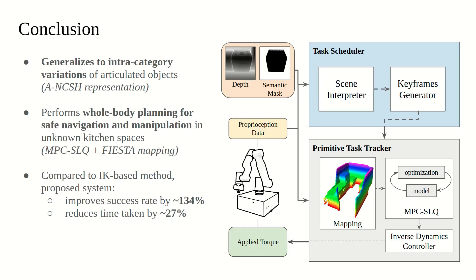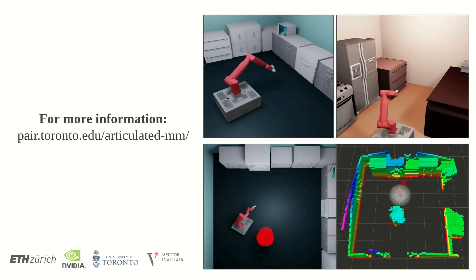In conclusion, we present a method that generalizes to inter-category variations of articulated objects and ensures safe navigation and manipulation in unknown kitchen spaces. Compared to the inverse kinematics approach, our method improves the success rate by 134% and reduces the time taken to complete a task by 27%. For more information, please check the following link.